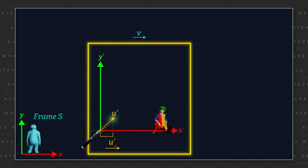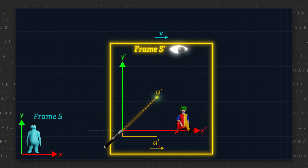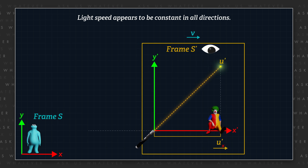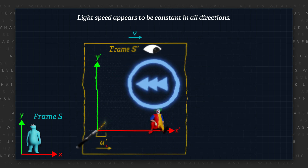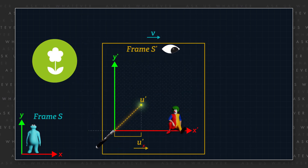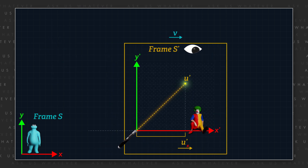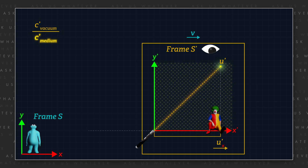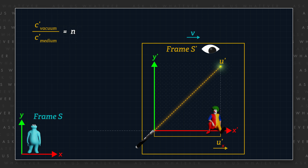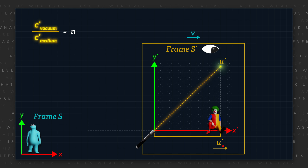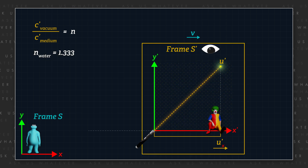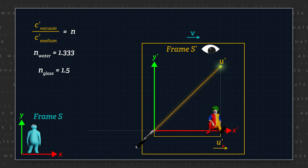We'll begin from the perspective of observers on the Earth, which we will deem to be our moving frame S-prime. Light speed appears to be constant in all directions on Earth, and if we pass light through a refractive medium such as water or glass, it also appears to travel at a constant but slower speed in all directions, regardless of the time of day or the season of the year — in other words, independent of the motion of the Earth through space. If we quantify light speed through a refractive medium by measuring the ratio of light speed through vacuum divided by light speed through the medium, we call that ratio the refractive index n. The value for n is about 1.333 for water and about 1.5 for glass, although both measurements can vary with temperature, wavelength, additives, etc.